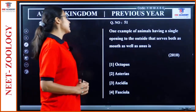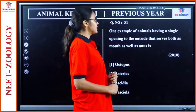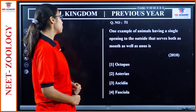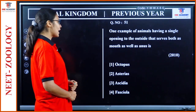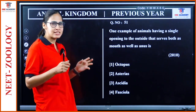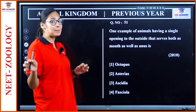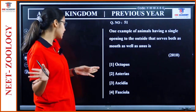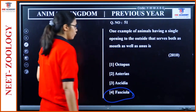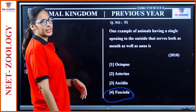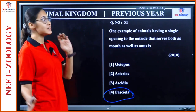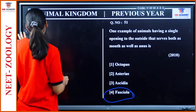Question 51: 'Example of an animal having a single opening that serves both as mouth and anus.' We want an organism with an incomplete digestive system — that is Fasciola (liver fluke, Platyhelminthes). The remaining options have a complete digestive system. Option 4.